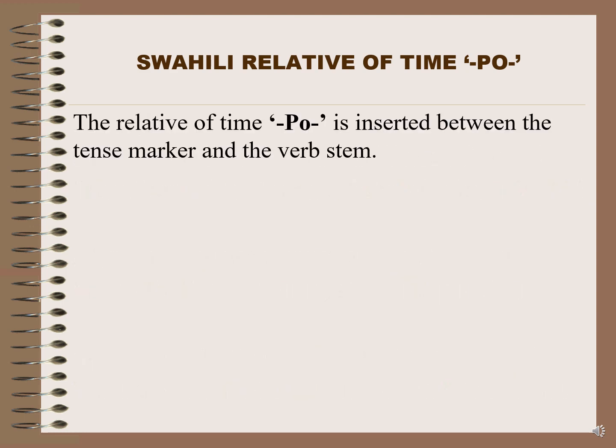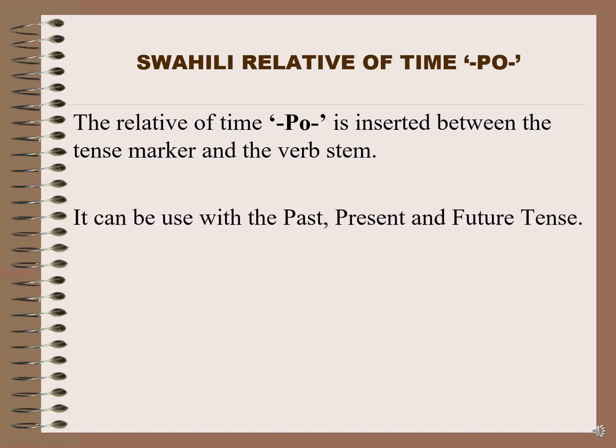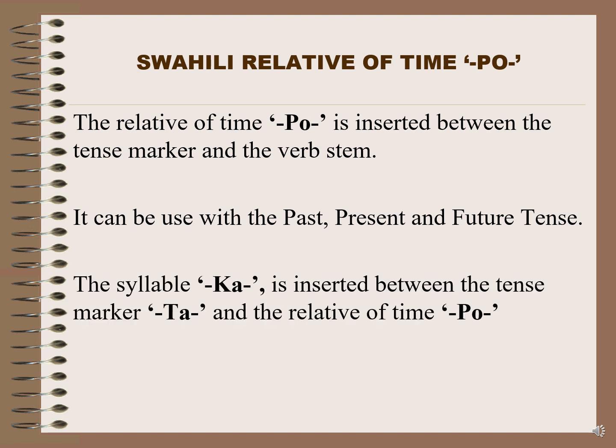The relative of time po is inserted between the tense marker and the verb stem. It can be used with the past, present, and future tense. For the future, the syllable 'ka' is inserted between the tense marker 'ta' and the relative of time po.